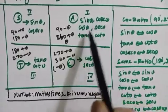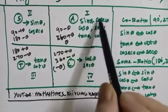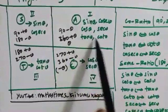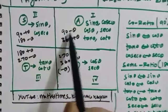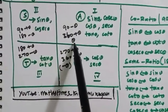Talking of sin, cos, tan — in the first quadrant, all are positive. First quadrant: 60 plus theta.